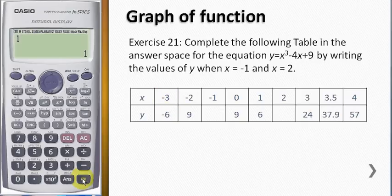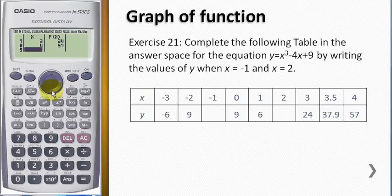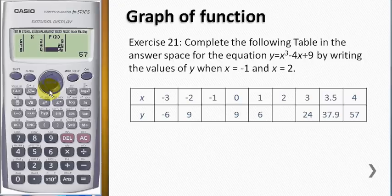Then I press 1 and then equal and the calculator will show you when x is negative 3 and until x is equal to 4, the corresponding fx value is negative 6, 9, 12, 9, 6, 9, 24, 57. Thank you.